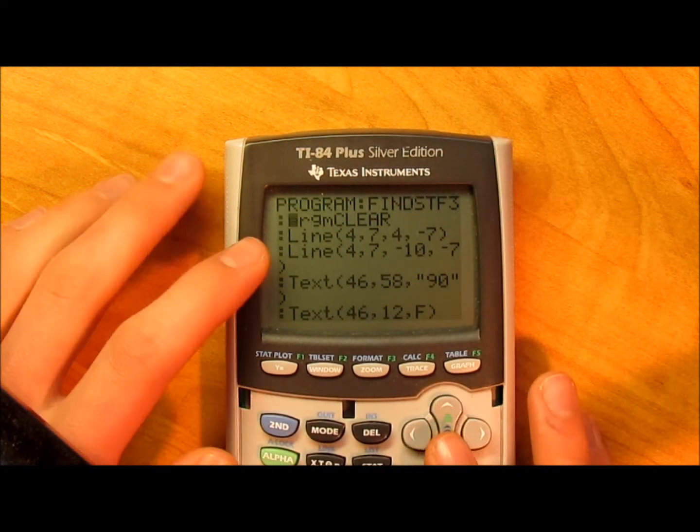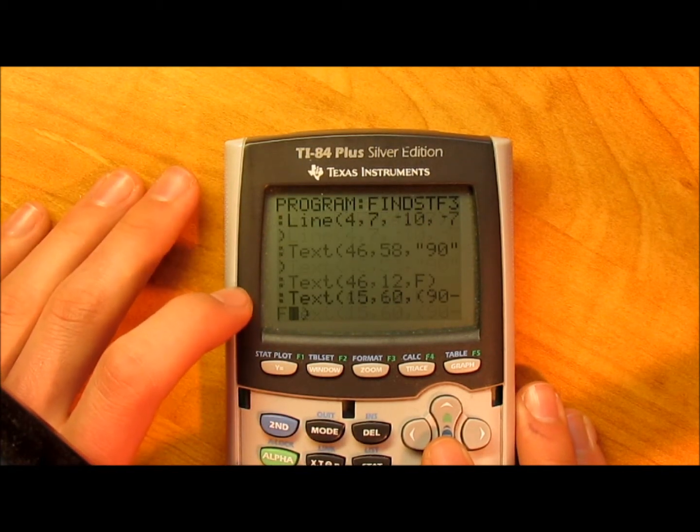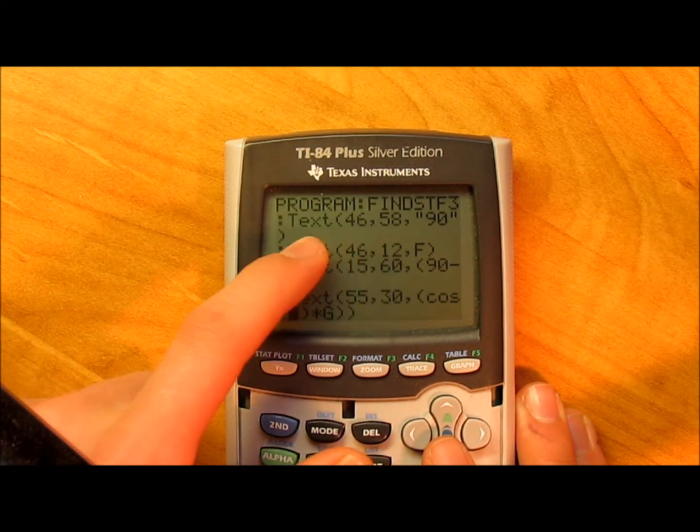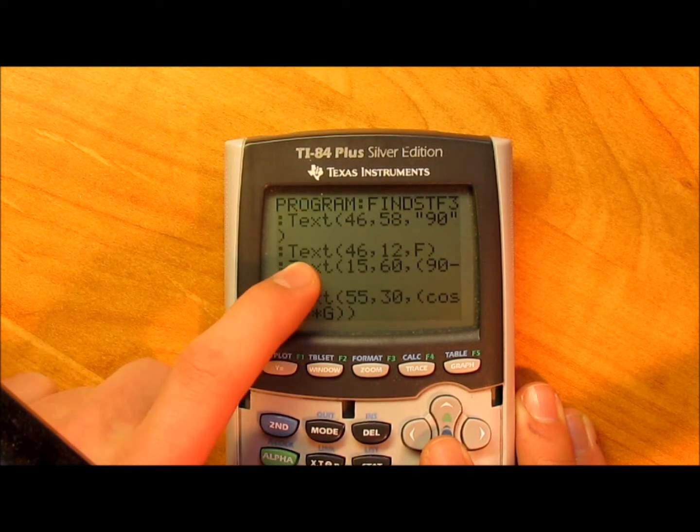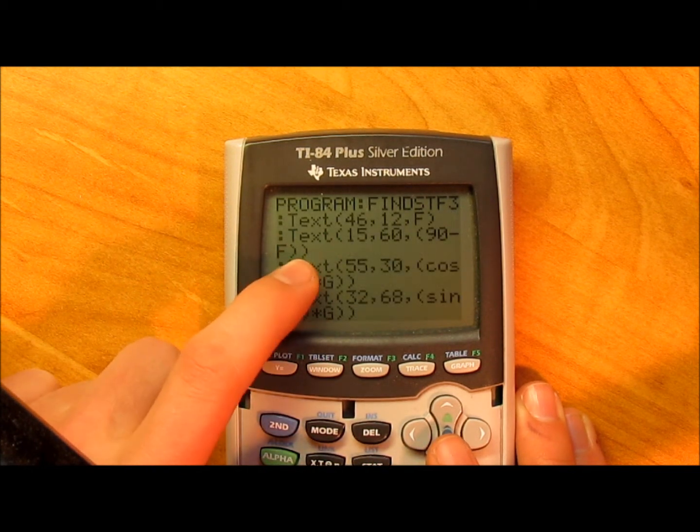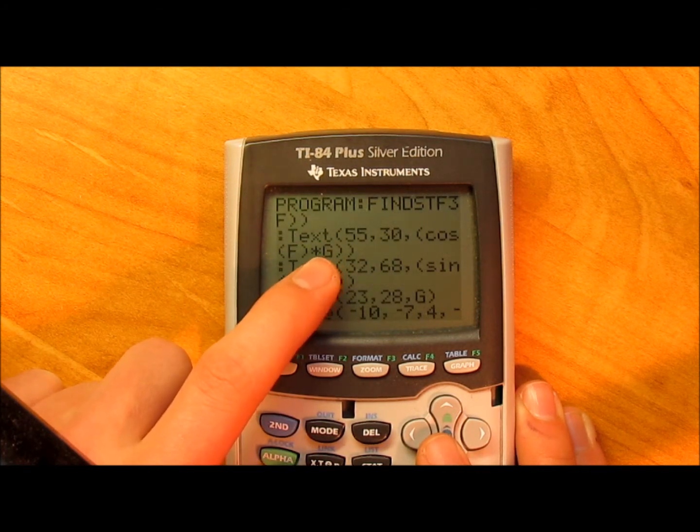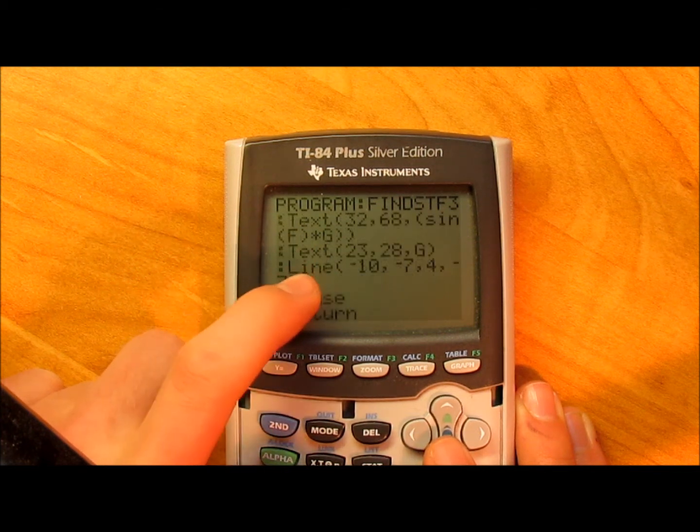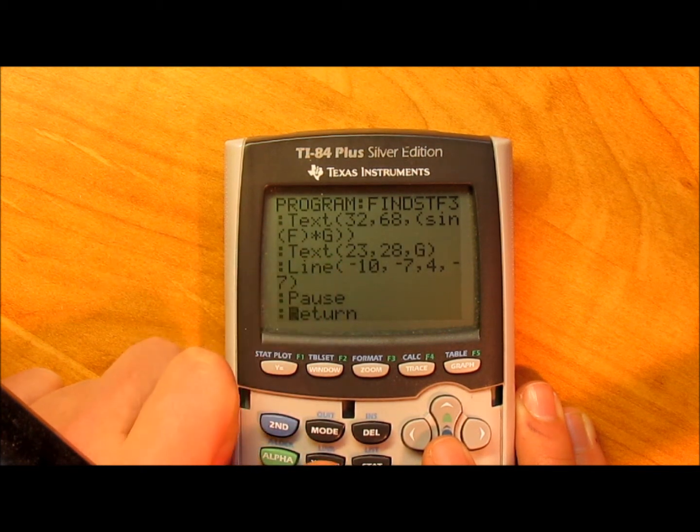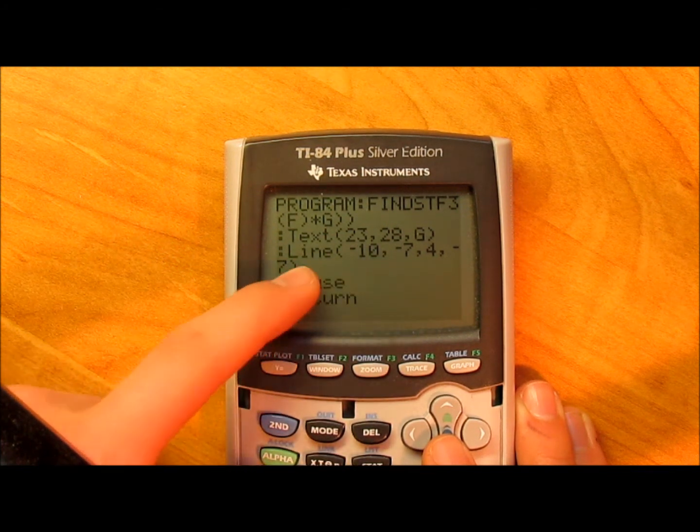So start with the program clear, make the two lines of the triangle, then this is displaying the angle at 90 degrees. This is the angle you're given, this is the third angle. This text is finding one of the sides, this is finding the other side, that's displaying the side that you're given, and you got the last line for the side of the triangle.